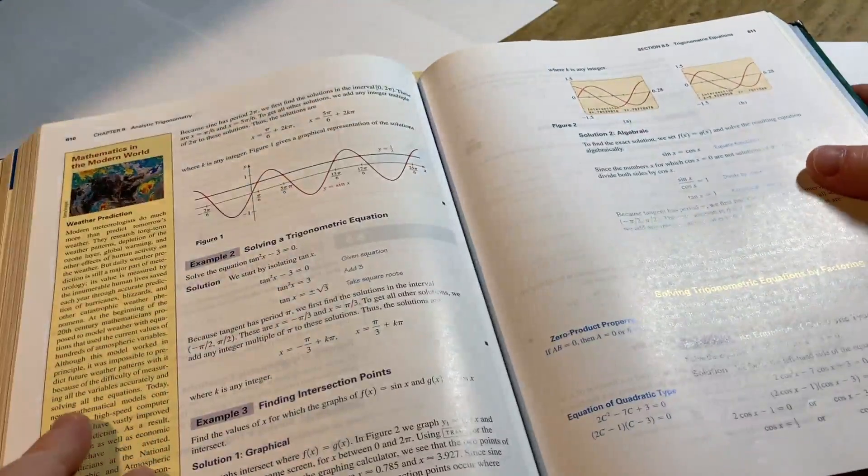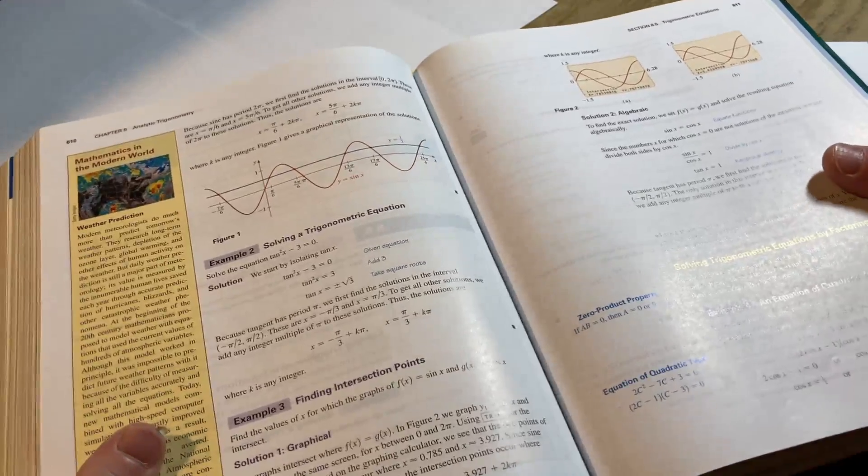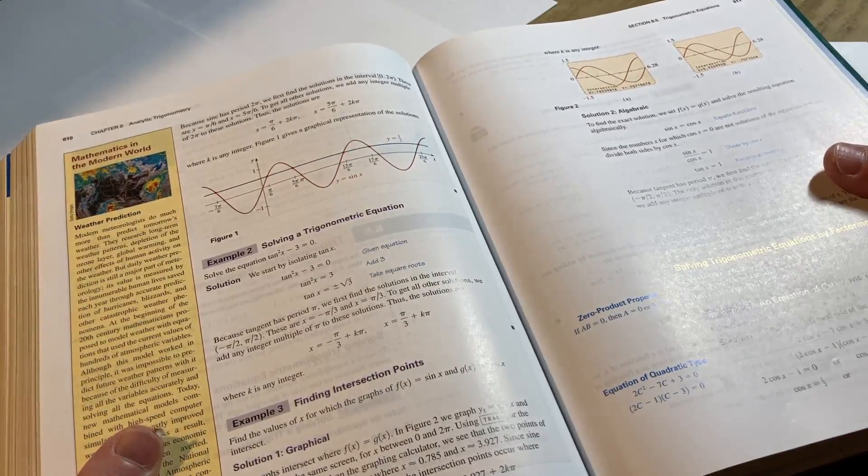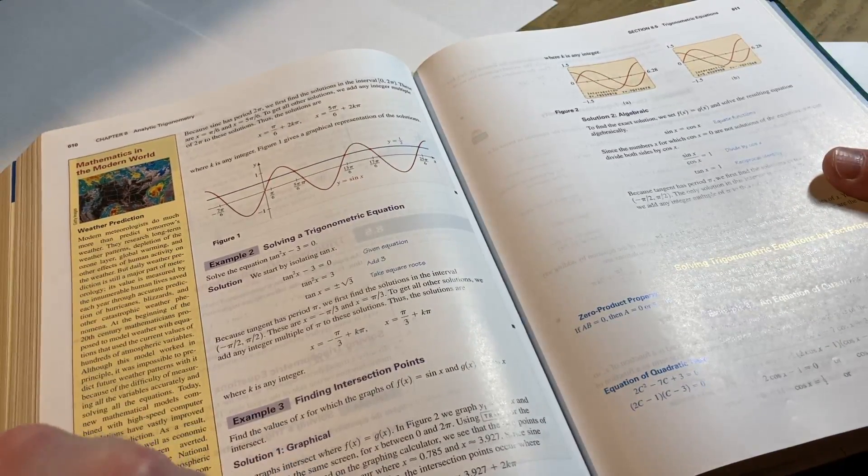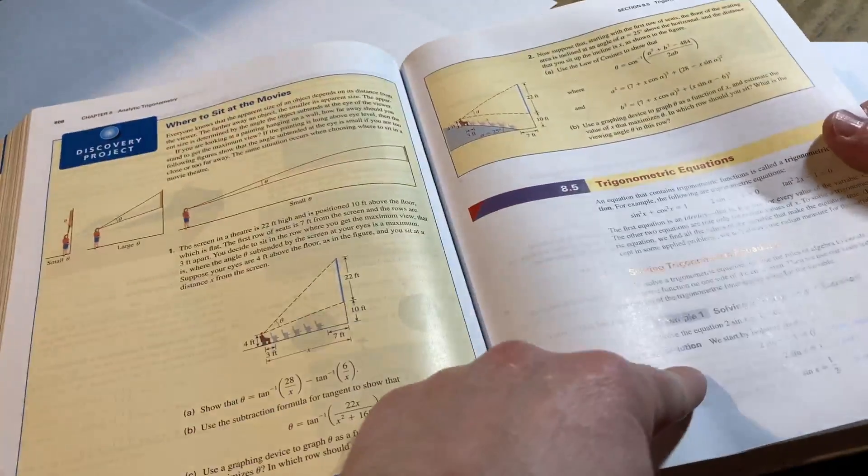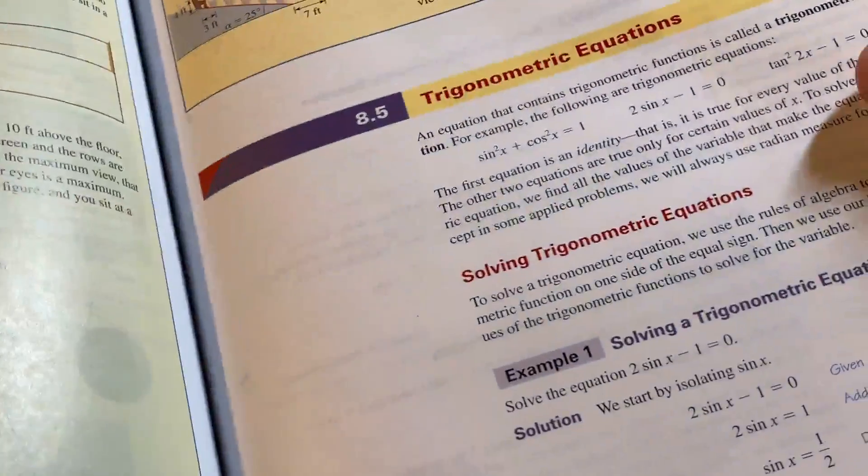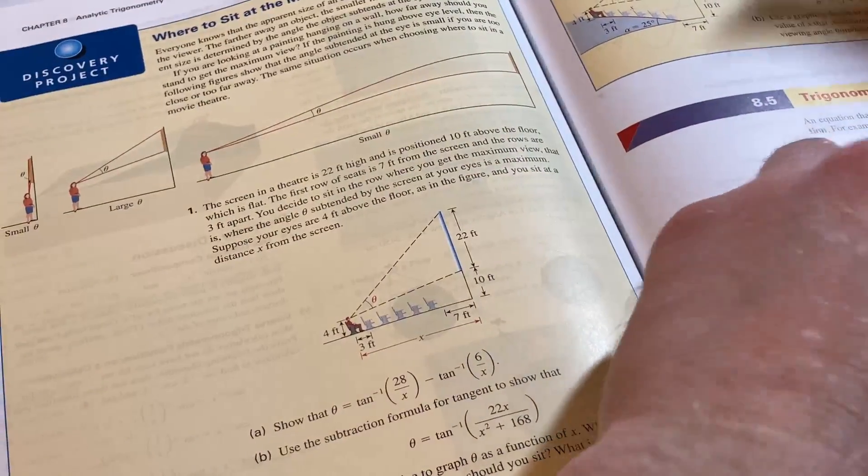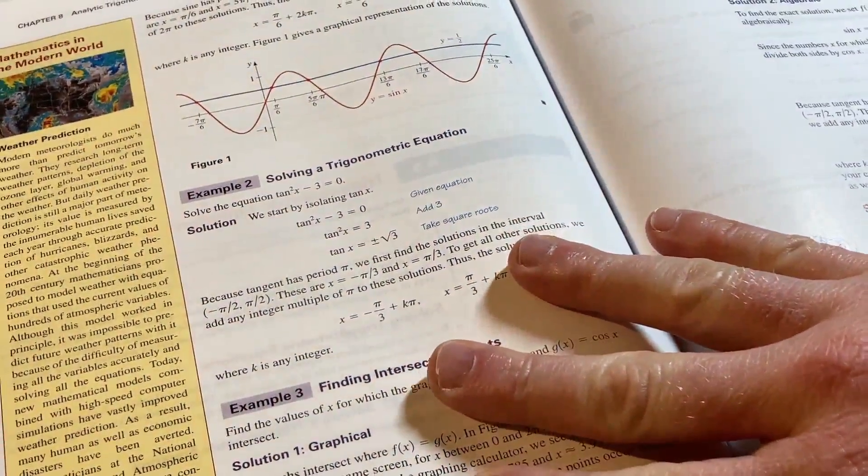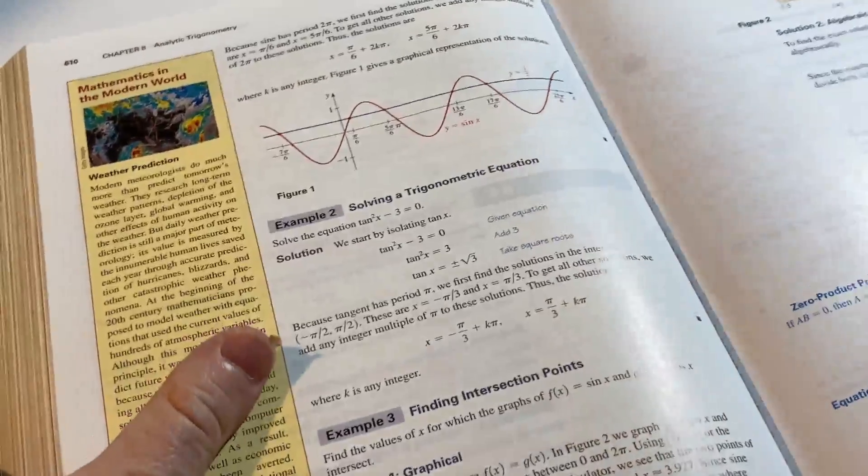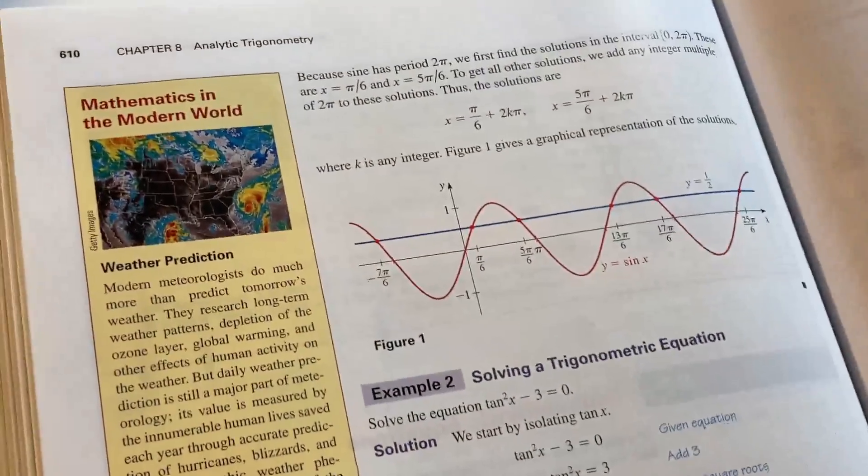Let me just show you some of the examples so you can see what they look like. Trigonometric equations. This is actually one of the hardest things for people who take trig, solving trig equations. The book does have a lot of examples. You have one example here which is pretty easy: 2 sine x minus 1 equals 0. They find all the solutions.